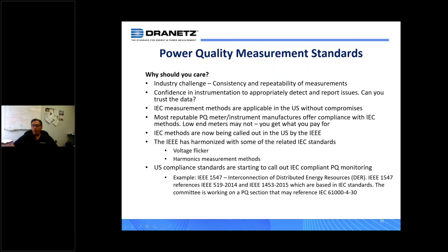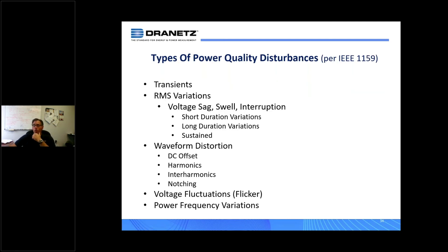In other areas such as voltage flicker and harmonic methods, the IEEE is harmonizing with IEC requirements. IEEE 1547, for distributed energy resources — solar, wind, and other alternative energy interconnecting to the grid — references some of these measurement techniques and addresses not only safety but also power quality issues at the point where power is pushed back onto the grid. Going through the power quality disturbance types quickly: a transient is a short-term change — the microseconds and milliseconds kind — basically a spike that can blow something up or lock a device up.